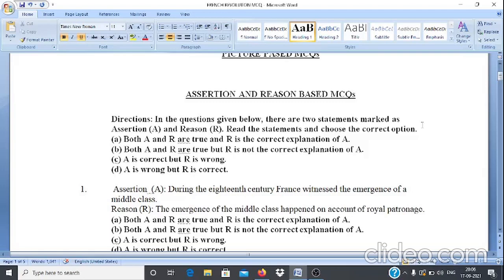If both assertion and reason are true but reason is not the correct explanation of assertion, then students are supposed to mark option B. And if assertion is correct but reason is wrong, then students are supposed to mark option C.